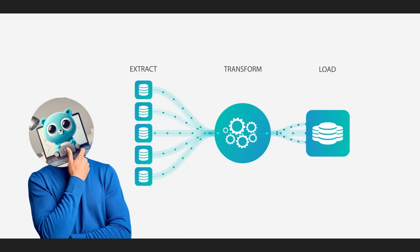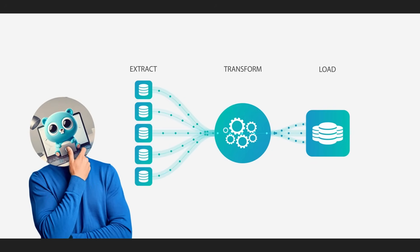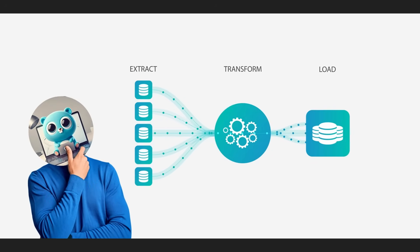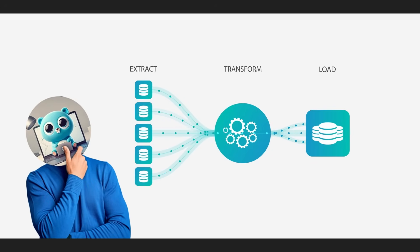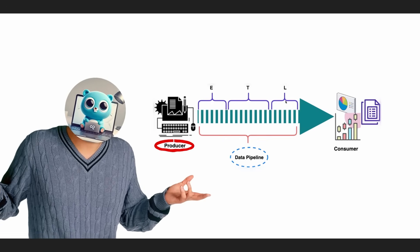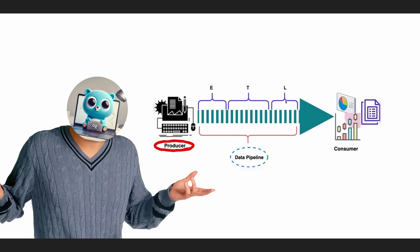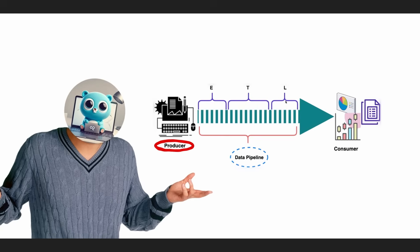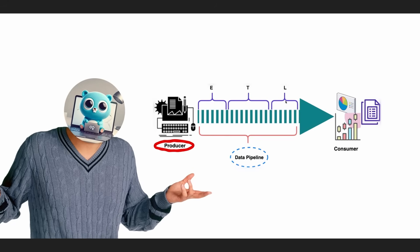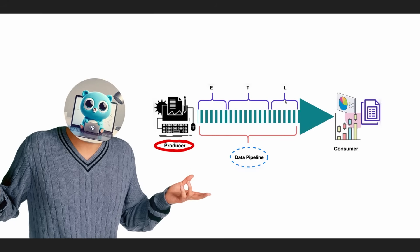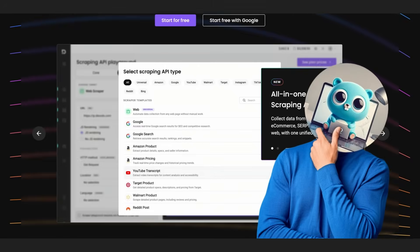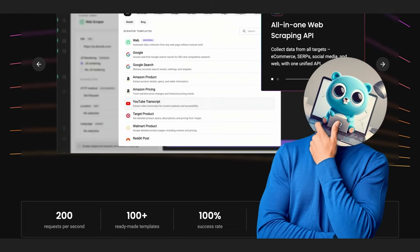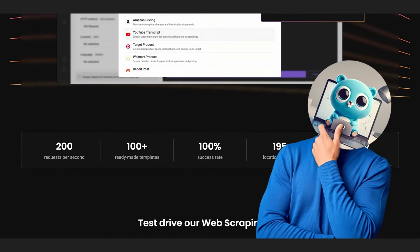For data engineers and AI teams, your data pipelines are only as reliable as their sources. When an ETL or ELT job fails because a website blocked your server or changed its layout, your downstream models and dashboards become stale. Decodo's Universal Scraping API acts as a durable, managed data source.